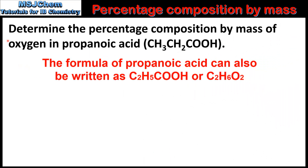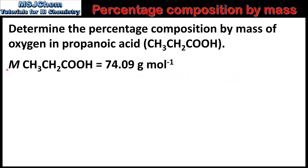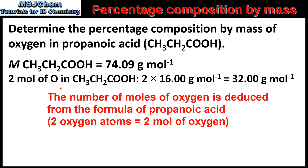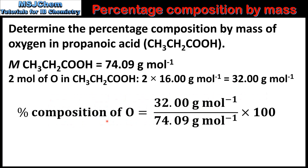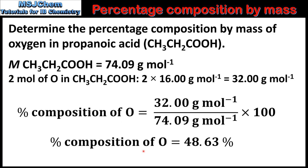In our next example we'll determine the percentage composition by mass of oxygen in propanoic acid. The first step is to calculate the molar mass of propanoic acid, which is 74.09 grams per mole. In 1 mole of propanoic acid there are 2 moles of oxygen, so we multiply the molar mass of oxygen by 2, which gives us 32.00 grams per mole. To calculate the percentage composition by mass of oxygen we divide 32.00 by 74.09 and multiply by 100, which gives us 43.86%.